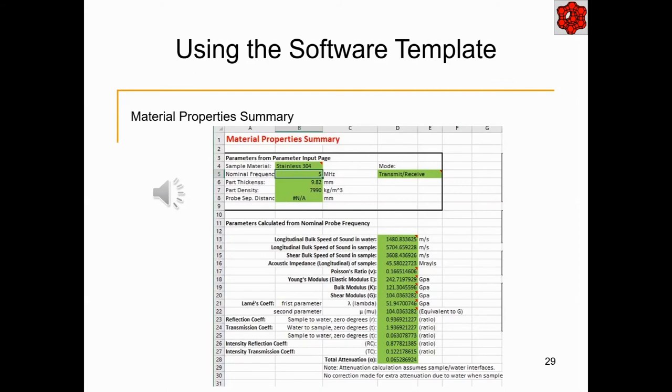There is a summary of the material properties provided on a separate worksheet. When both longitudinal and shear velocities can be determined, a full set of calculations is used to generate the table. Note that the temperature and density that were entered on the test description worksheet are used to calculate many of the values, so ensure they are correct. Temperature in degrees Celsius and density in kilograms per meter cubed.